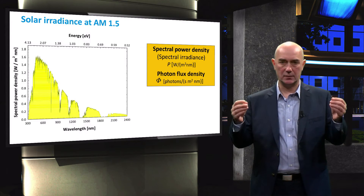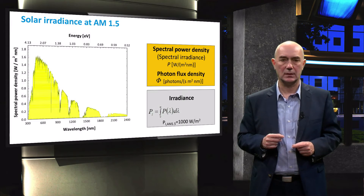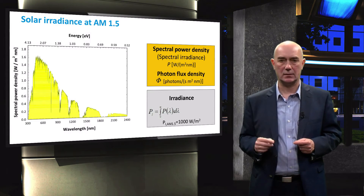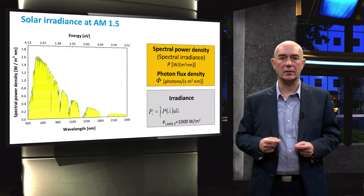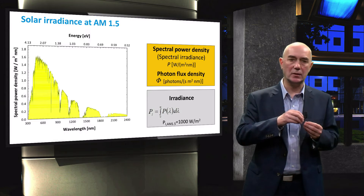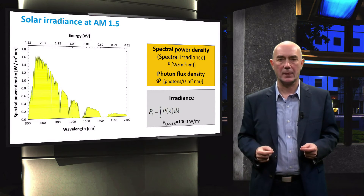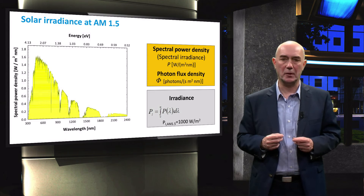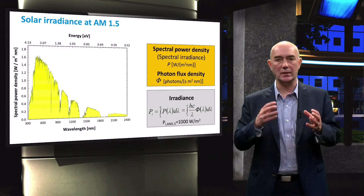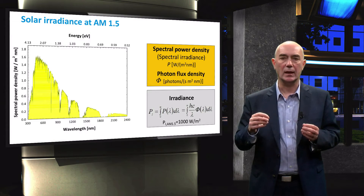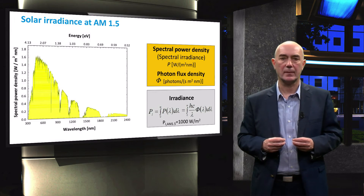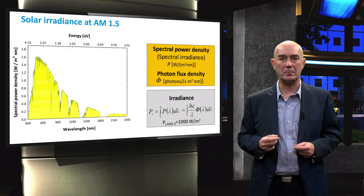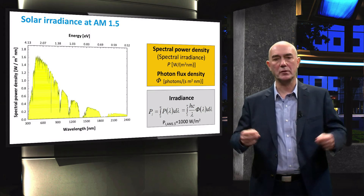Another important parameter to describe the incident power of light is irradiance. Irradiance is the total power density of incident light, and we can calculate it by integrating the spectral power density over the wavelength. As spectral power density and photon flux density are related via photon energy, irradiance can also be found by integrating the product of photon energy and photon flux density over the wavelength. When measuring the conversion efficiency of solar cells, we use the AM1.5 spectrum irradiance of 1000 watts per square meter.